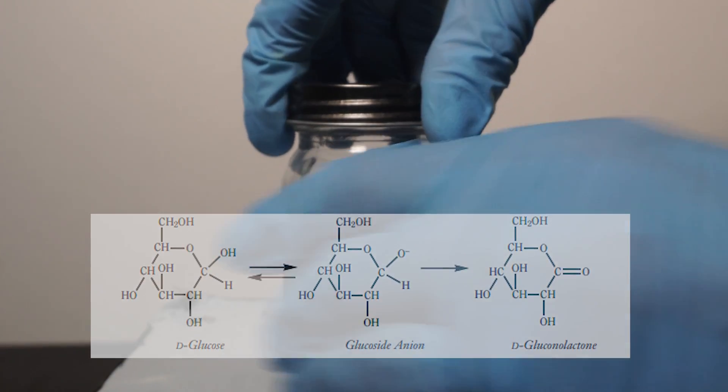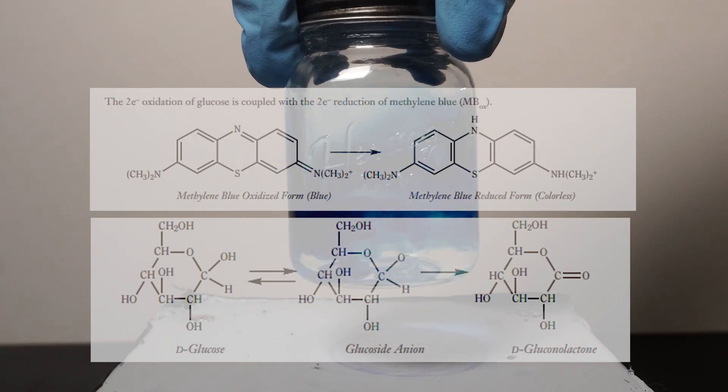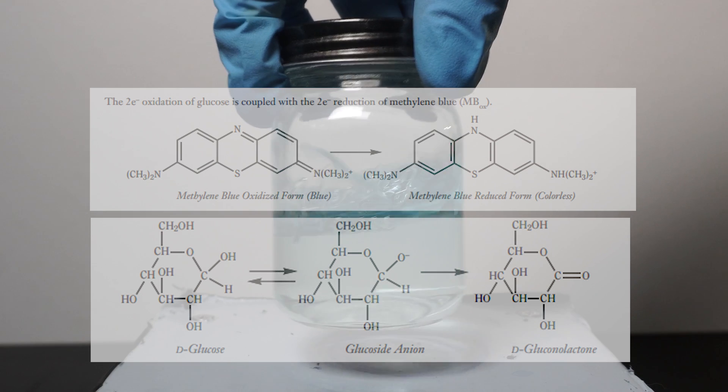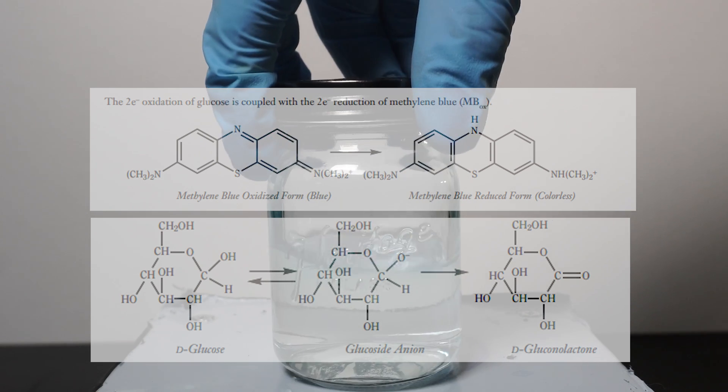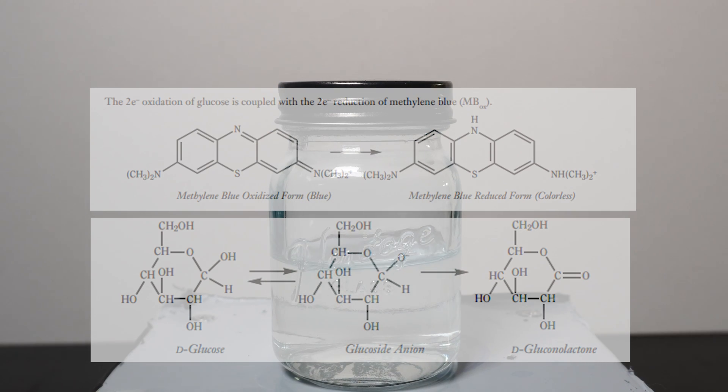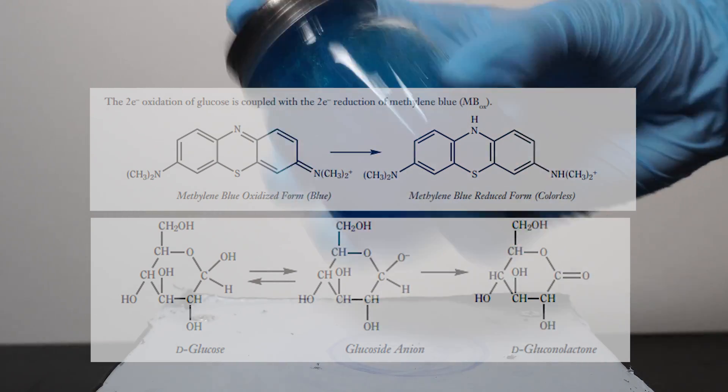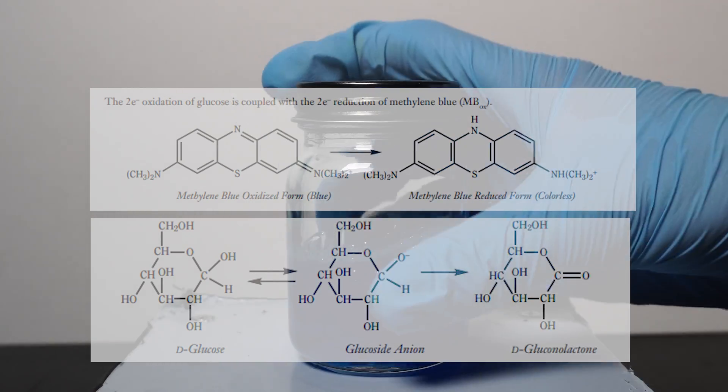When we add in our methylene blue, the oxidation of glucose is paired with the reduction of the methylene blue. In chemistry, a reduction is something that gains electrons, and during oxidation, something loses electrons. When these two reactions are coupled together, it is generally called a redox reaction for short.